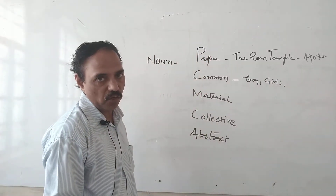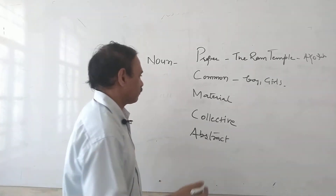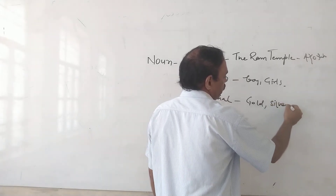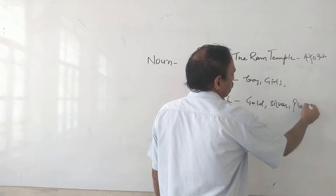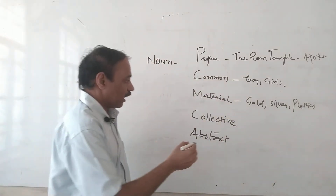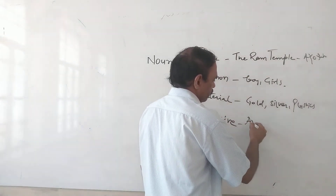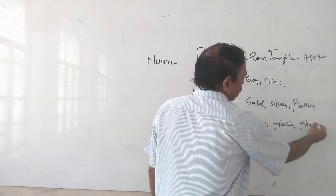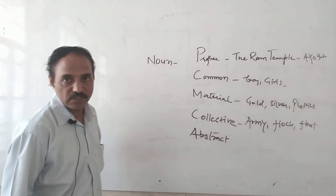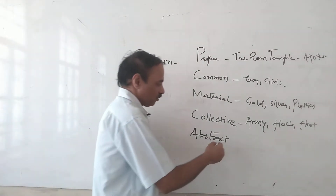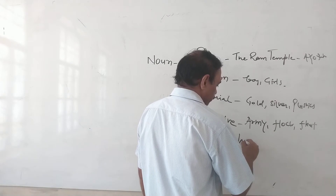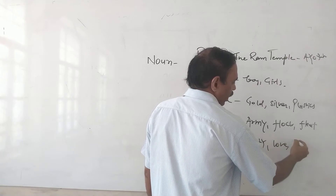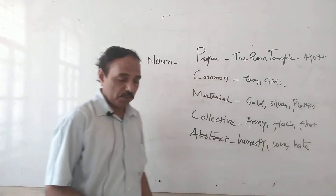Teacher, professor, doctor, lawyer, parents - Material Noun. Gold, silver, plastic - things made of material, that is called Collective Noun. Army, flock, fleet - that is Abstract Noun. Honesty, love, hate, poor - he is very poor.